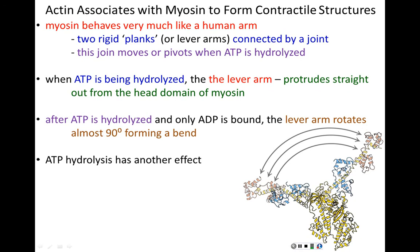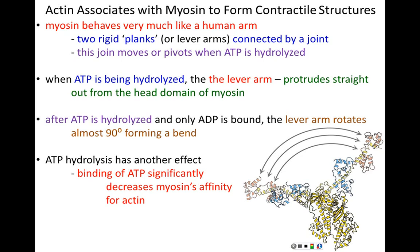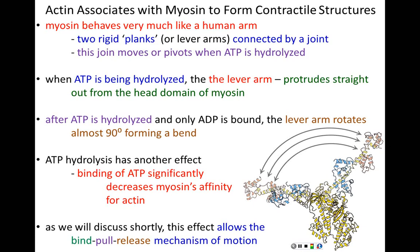ATP hydrolysis has another effect as well — binding of ATP significantly decreases myosin's ability to bind to actin. However, when that ATP is hydrolyzed and myosin is bound to ADP, its affinity for actin goes way up and the myosin protein rebinds to the actin filament. We're going to end this explanation with the idea of a bind-pull-release mechanism of motion. It is the binding and release due to ATP and ADP binding by myosin that allows both the binding and releasing of myosin and the pulling — the power stroke of movement.